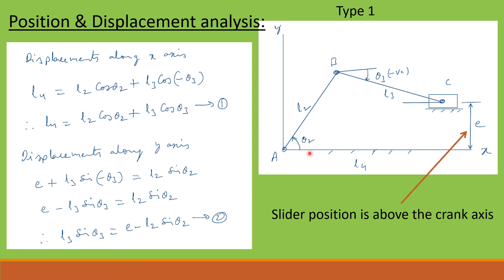We have theta 2 in the counterclockwise direction and theta 3 in the clockwise direction — let us consider that negative. We have lengths L2, L3, L4, and offset E. Let us now write the displacement equations.